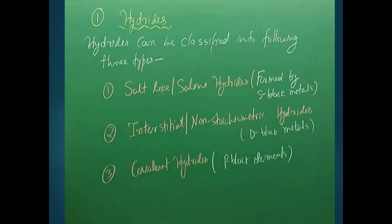The second category is interstitial, non-stoichiometric, or metallic hydrides. These are formed by d-block metals, which span from group 3 up to group 12, so these groups form the interstitial or metallic hydrides.